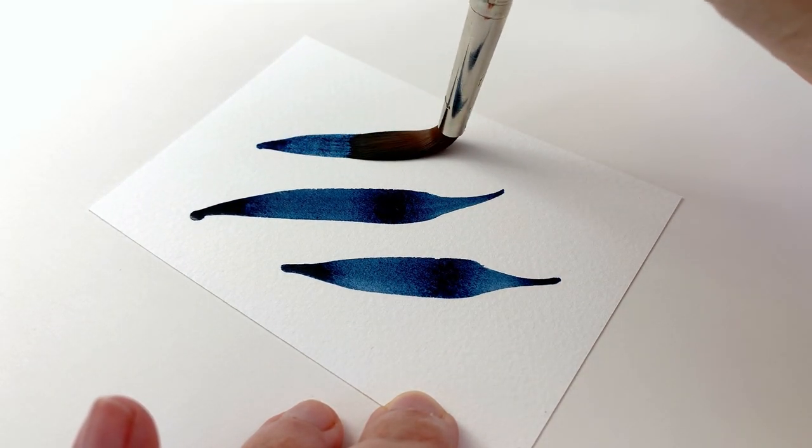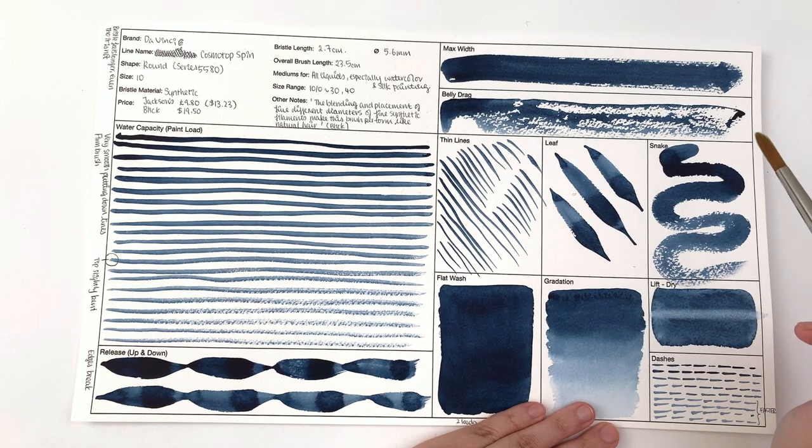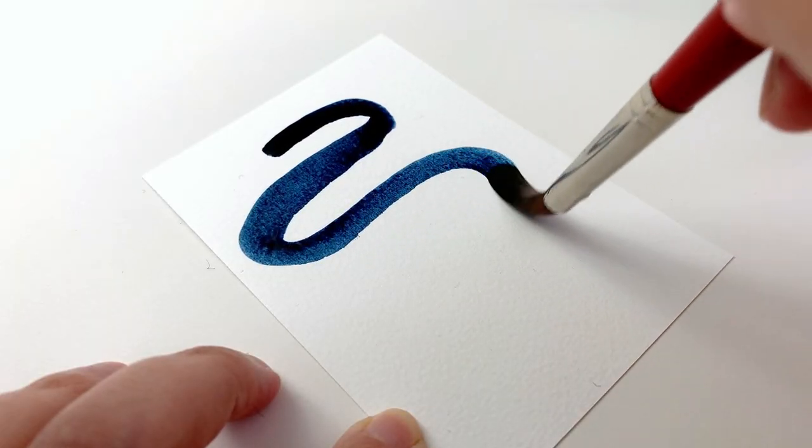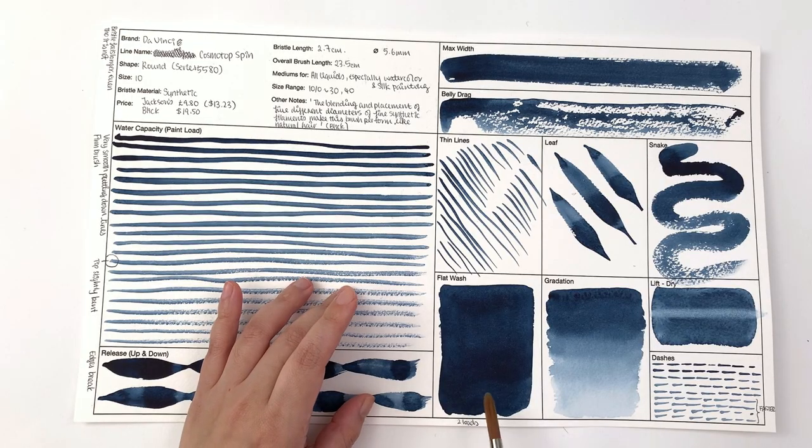For snaking, again as we've seen the edges break up a lot, but that's not a bad thing if that's what you're looking for. For the flat wash I used two loads of paint on the brush.